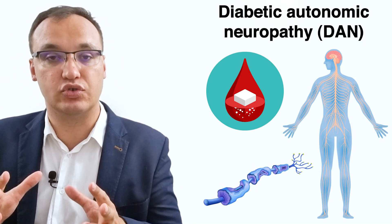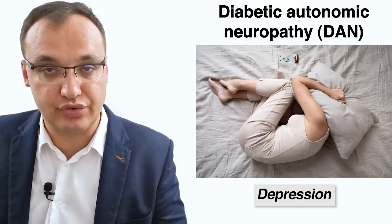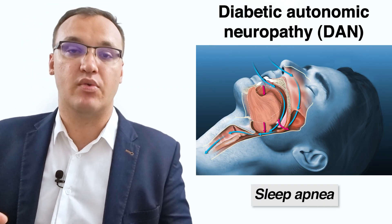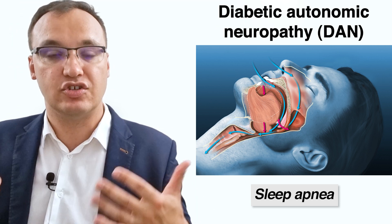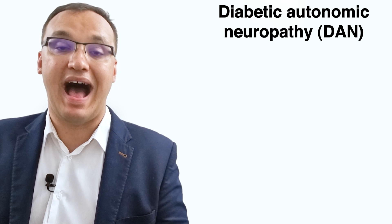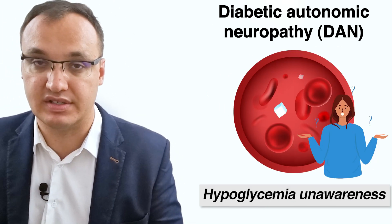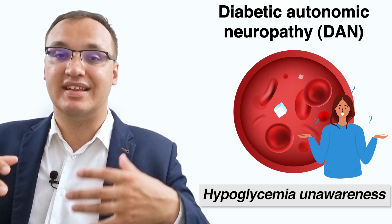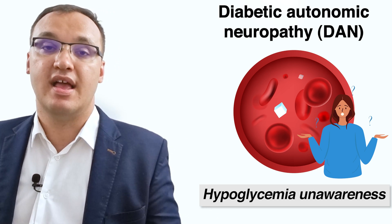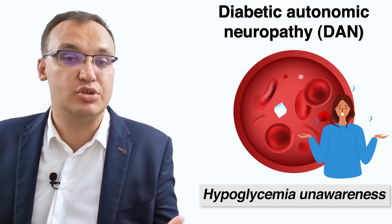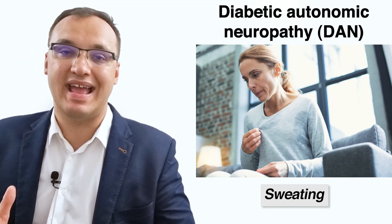Other symptoms of diabetic autonomic neuropathy include anxiety, depression, sleep apnea — a potentially serious sleep disorder in which breathing repeatedly stops and starts — and hypoglycemia unawareness, where the patient is completely unaware of having low blood glucose. Hypoglycemia unawareness generates symptoms like palpitations, sweating, and anxiety.